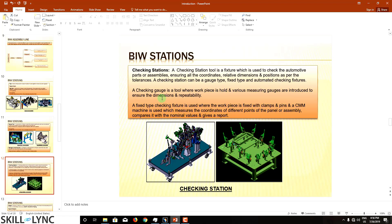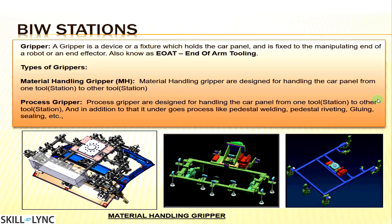Automated checking fixtures are considered very costly, and they don't make a huge difference over fixed type checking fixtures, so we generally avoid them. A gripper is a device or fixture that holds the car panel and is fixed to the manipulating end of a robot or end effector. Grippers are kept as low weight as possible because they are mounted on a robot arm, so we use frames instead of plates and use localized individual plates to keep them sturdy yet light.